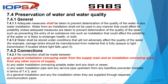In SANS 10252 Part 1, sub-section 7.1 covers preservation of water and water quality. Clause 7.4.1.1 states: adequate measures shall be taken to prevent deterioration of the quality of water - not 'should try' but a definite 'shall.' Clause 7.4.2 discusses connections, stating that a general installation conveying water from the supply main and an installation conveying water from any other source of supply must not be connected - there must be a physical break between downstream and upstream water.